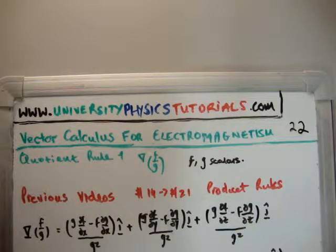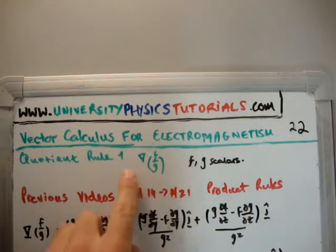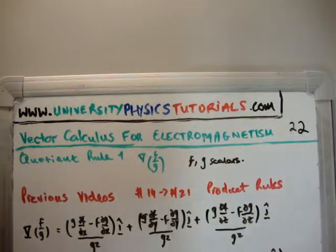With this one, we're going to take the gradient of a scalar function. The scalar function will be the quotient of two scalars, f and g. It's important to know that we're getting the gradient of a scalar function, which will give us back a vector field. So let's go ahead and do that.